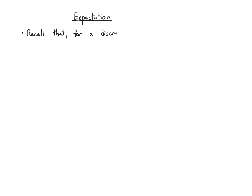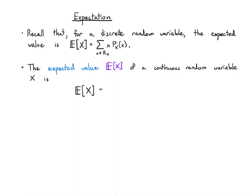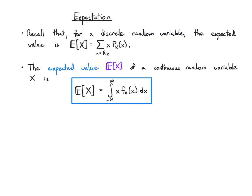For a discrete random variable, the expected value E[X] takes the values in X and adds them up weighted by their probabilities. Probabilities of specific values in continuous random variables are zero, but they do have probability densities. So we define the expected value E[X] of a continuous random variable to be the integral of the values x weighted by their density values from the pdf.